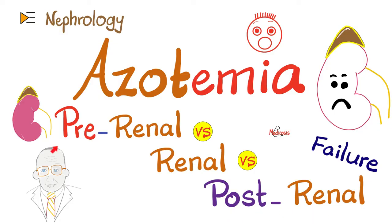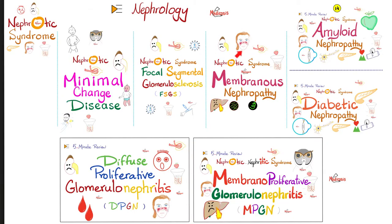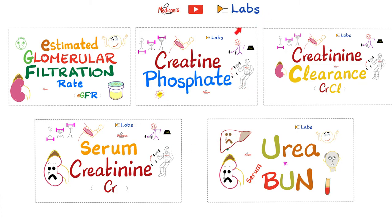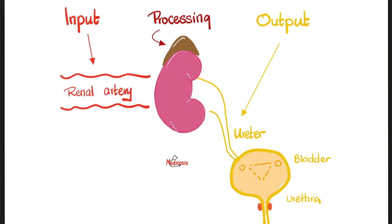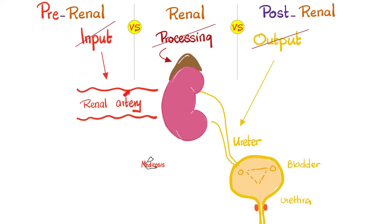You might find uremic faces and uremic frosting on the skin. Please watch the videos in my nephrology playlist in order, as well as specific videos from my labs playlist. Let's keep it simple — back to basics. Think of computer science: there's an input, a processing unit, and an output. The input to the kidney is the renal artery, the processing unit is the kidney itself, and the output is the ureter, bladder, and urethra.